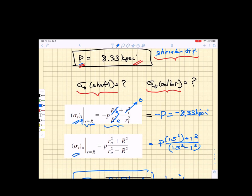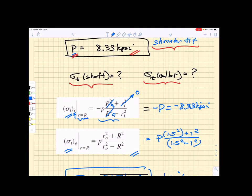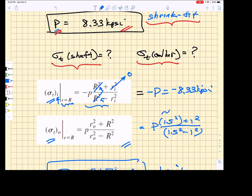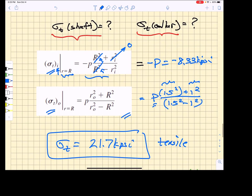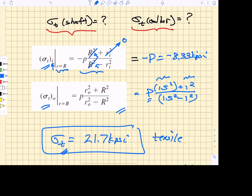The hoop stress in the collar would be given by this equation here where in this case the outer radius is 1.5 inches, the nominal radius is 1, and the pressure is what we already calculated at 8.33. When we solve that equation we find that the hoop stress in the collar is 21.7 kpsi and it is tensile.